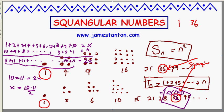Okay, that's it, I will tell you: the next squangular number turns out to be 1225, and the one after that turns out to be 41,616.